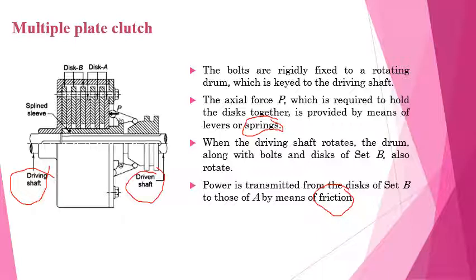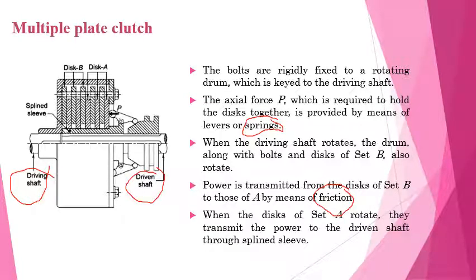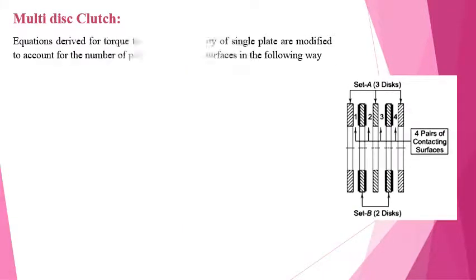When the discs of Set A come into contact with the discs of Set B, power is transmitted through friction. The rotating discs of Set A then transmit the power to the driven shaft via the splines. As we have seen, in the case of multiple plate clutches there will be more than one plate, and depending upon the number of plates, the number of contacting surfaces will vary.